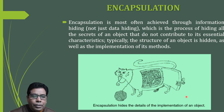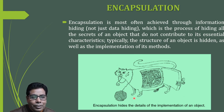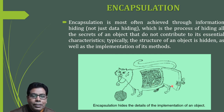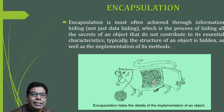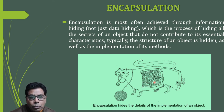Next is encapsulation. Encapsulation hides the details of the implementation of an object. As illustrated in the figure, if we close the door on an object, we are not able to see the implementation details. Encapsulation is achieved through information hiding — not just data hiding — which is the process of hiding all the secrets of an object that do not contribute to its essential characteristics. Typically, the structure of an object is hidden as well as the implementation of its methods. Only what we know is the behavior of the object.